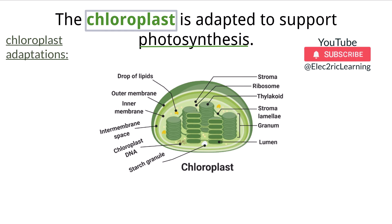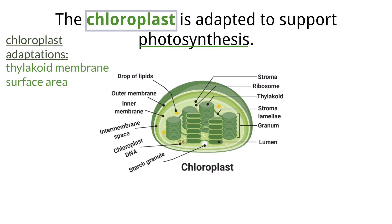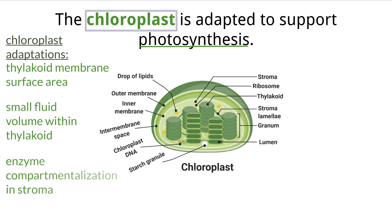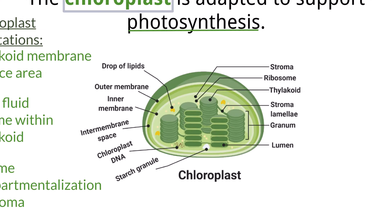The adaptations that you need to know for the chloroplast are the large surface area of the thylakoid membrane, the small fluid volume inside the thylakoid, and the compartmentalization of enzymes and substrates to support the Calvin cycle in the stroma.